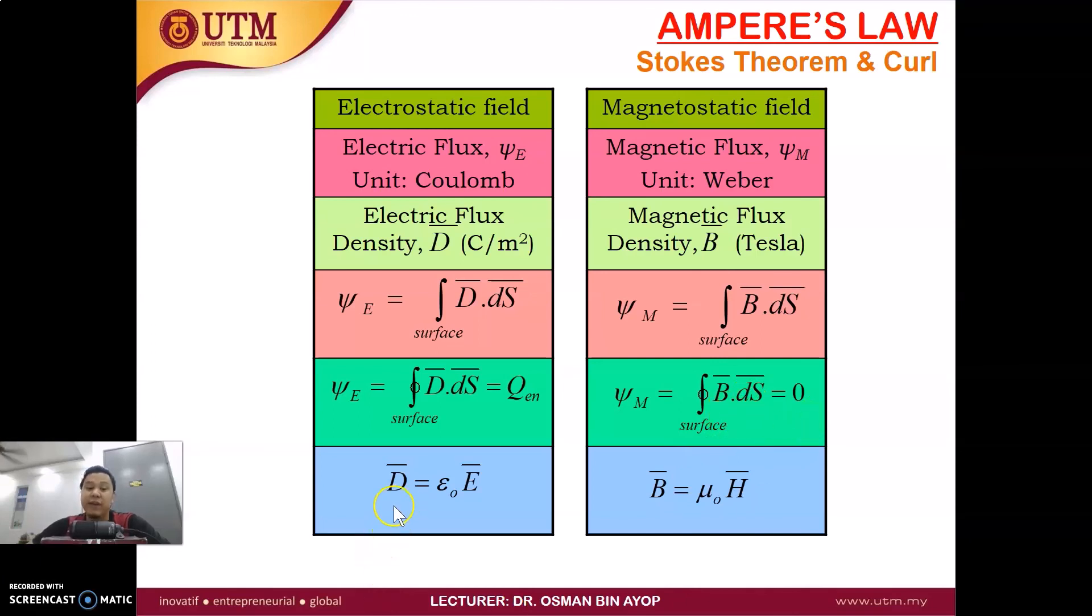And lastly, we can write D equal to epsilon E. We have D is equal to epsilon naught E in free space. And B is equal to mu naught H. So almost a similar form.